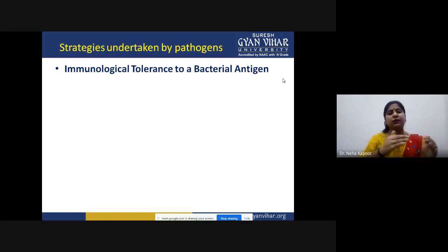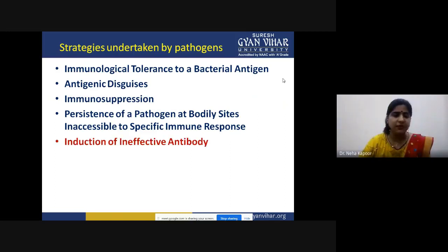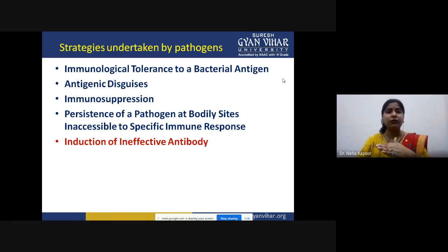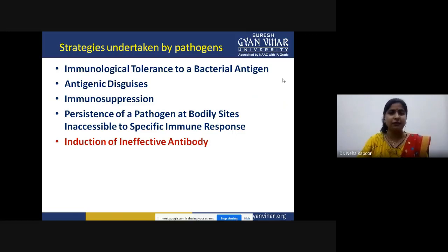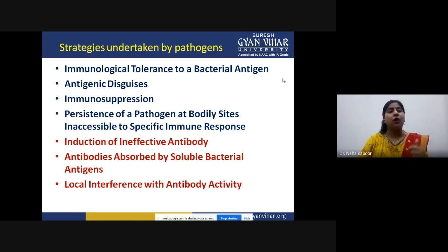The strategies we will discuss in detail are: first, immunological tolerance to a bacterial antigen; second, antigenic disguise; third, immunosuppression; fourth, persistence of a pathogen at sites inaccessible to specific immune responses; fifth, induction of ineffective antibody; sixth, absorption of antibodies by soluble bacterial antigens or local interference with antibody activity; and finally, antigenic variation. We will be discussing each one by one.